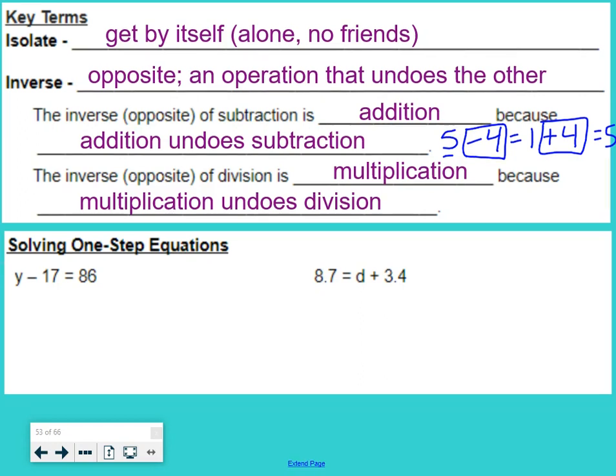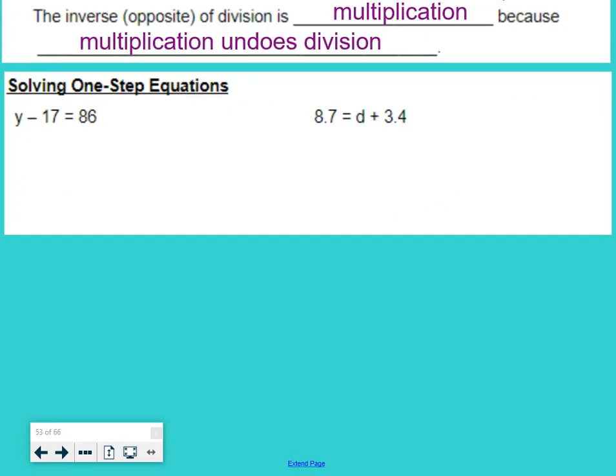So solving a one-step equation, we have to ask ourselves, what operation do we have? Here we have y minus 17 equals 86. First off, I'm going to draw those railroad tracks. If my goal is to isolate the variable, that means I want y to be all by itself. I want to get that y alone, which means that minus 17 has to be undone.